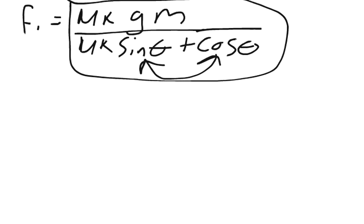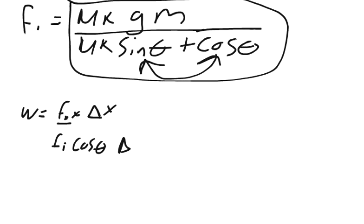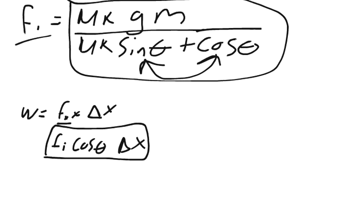Before plugging in numbers, let's also set up part two: how much work is done by the rope on the sledge? Work equals force times distance, and the relevant force is the x-component of F1. So work equals F1 cosine theta times the change in distance. Once you have your answer for part one, multiply F1 by cosine theta and then by the change in position.